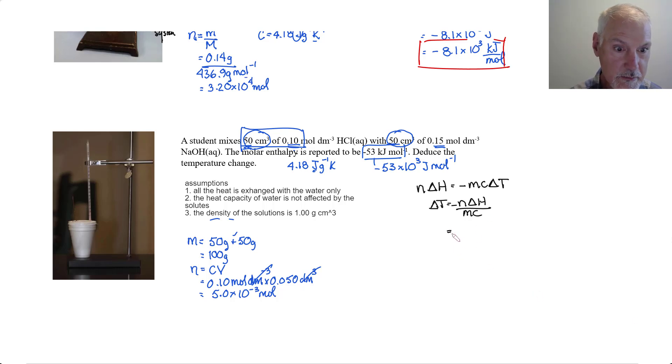So let's put in our values. We have minus 5.0 times 10 to the minus 3 moles and that's being multiplied by negative 53 times 10 to the 3 joules and on our bottom the mass of our water the surroundings was 100 grams and our 4.18 and solving for that we get a positive 0.63 Kelvin.